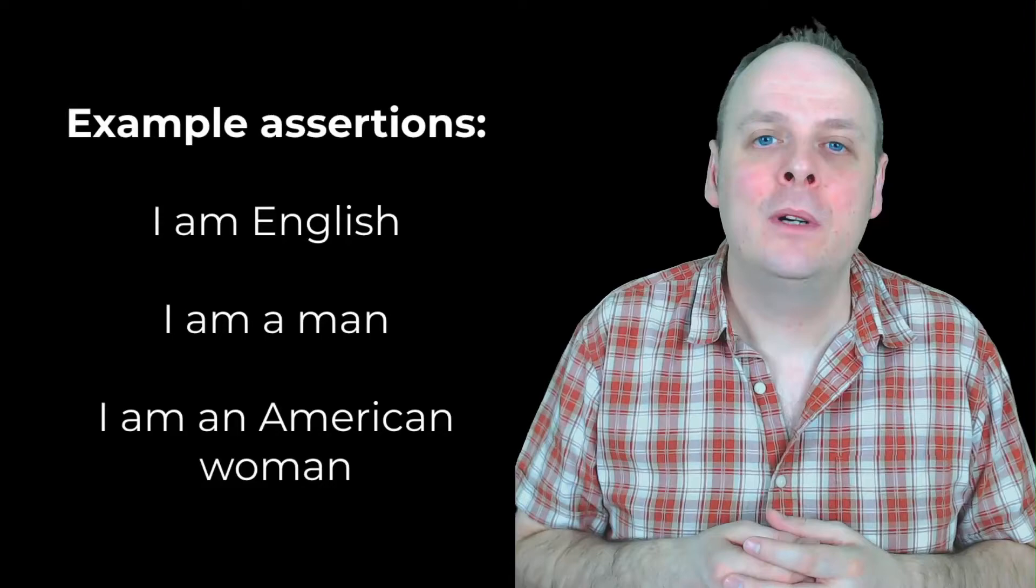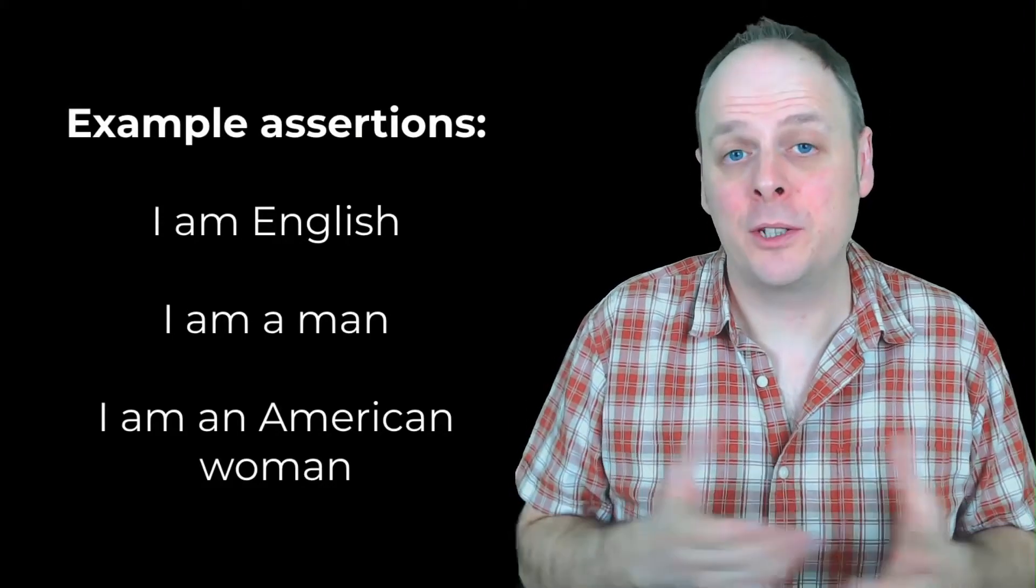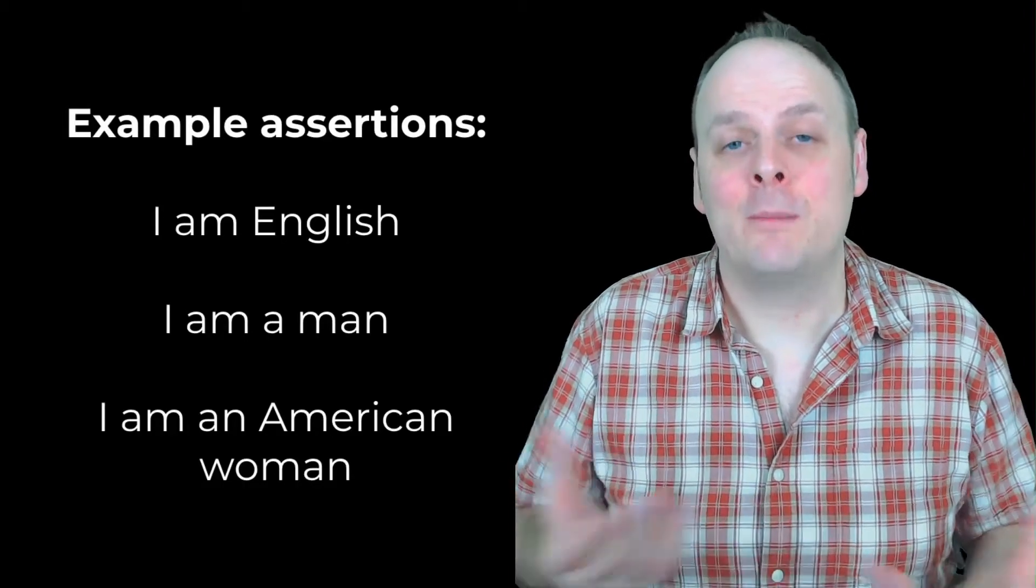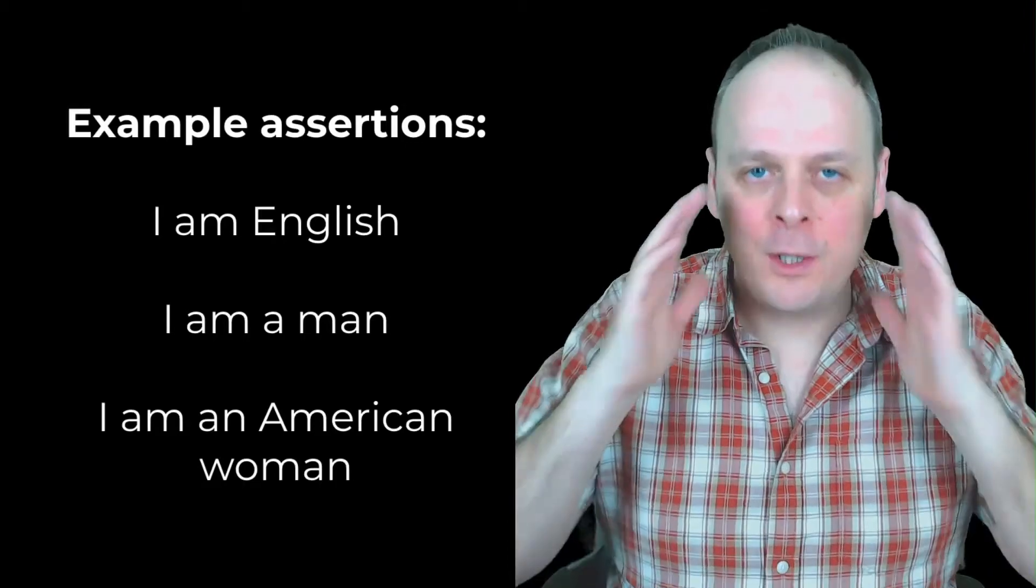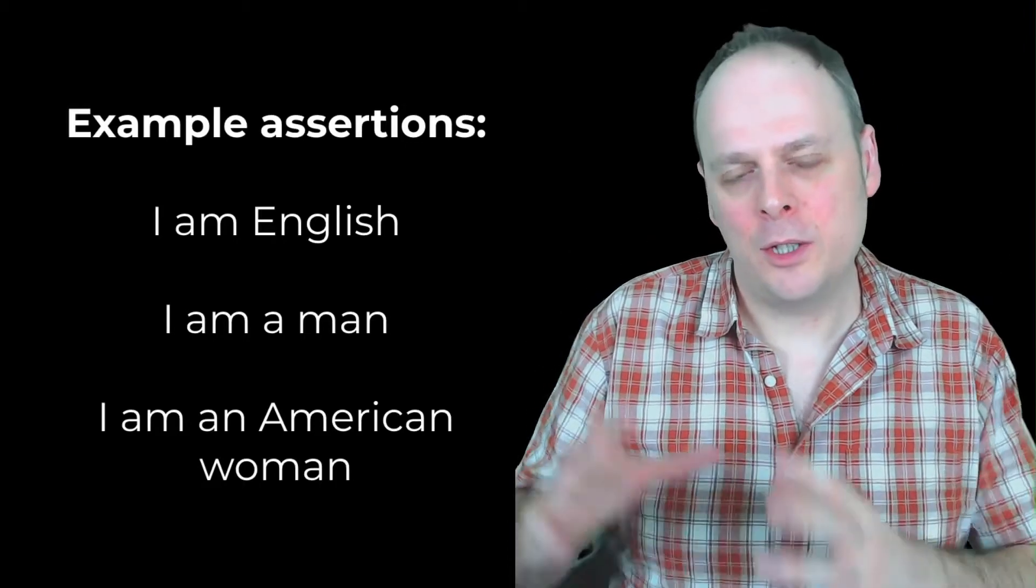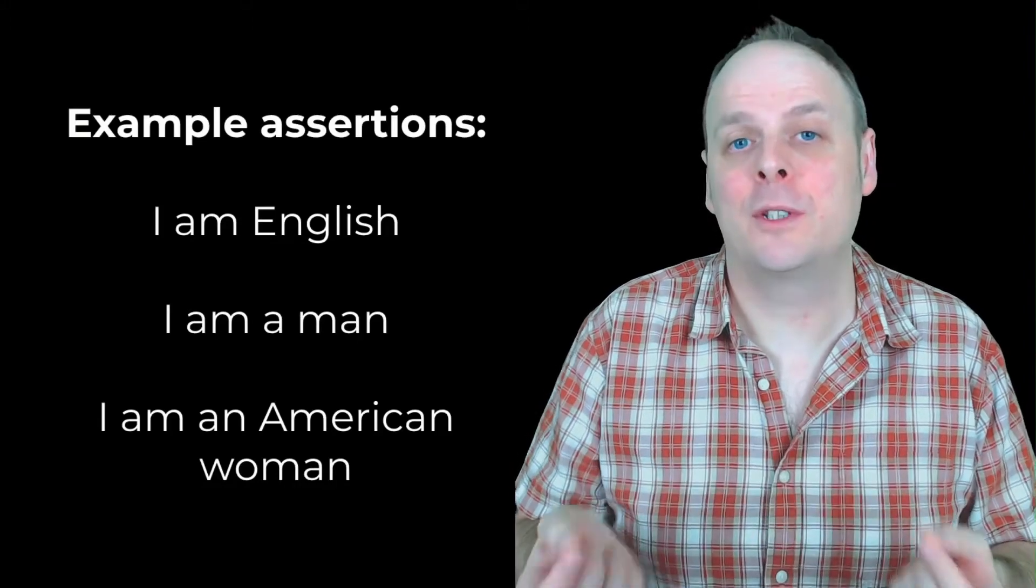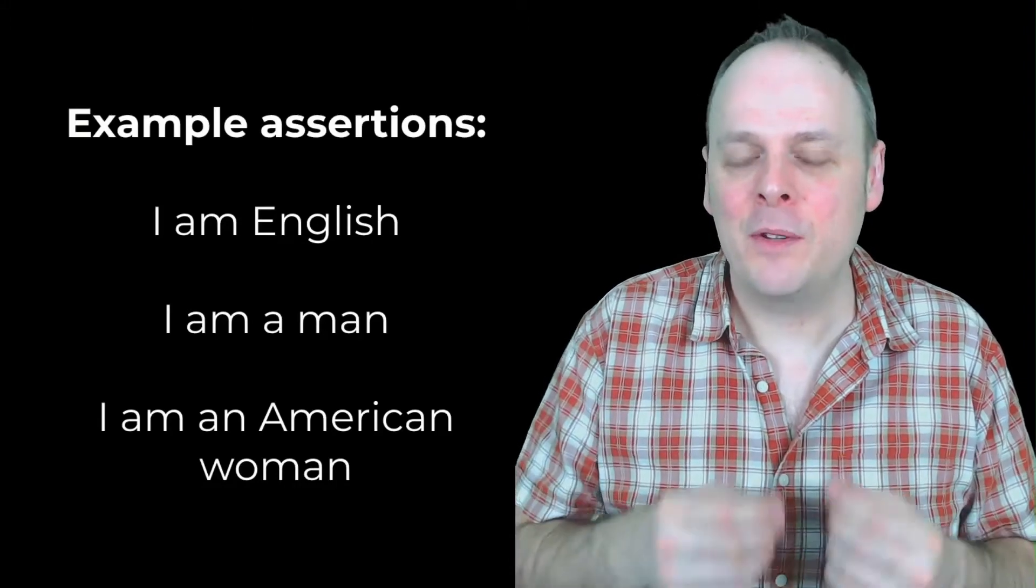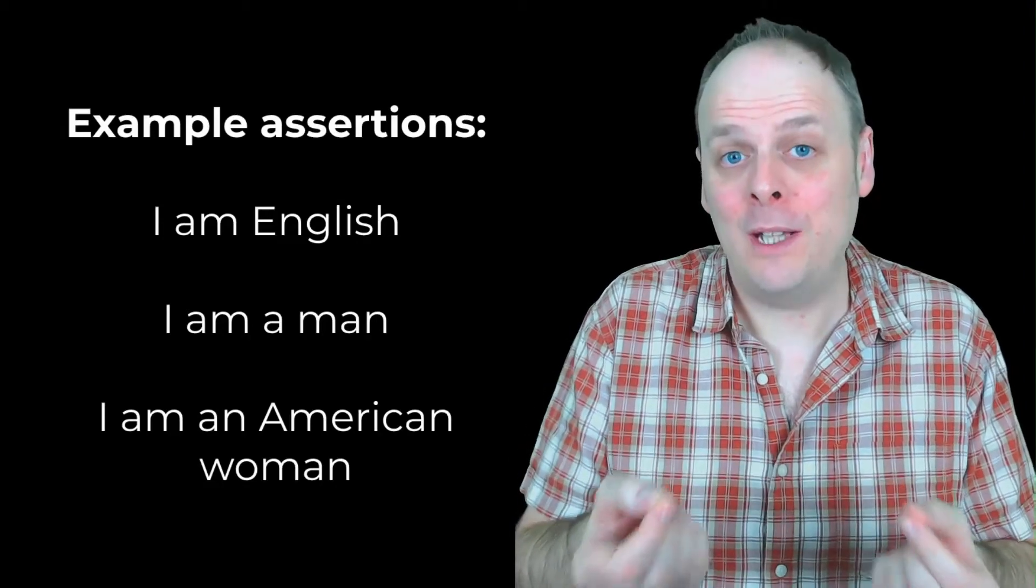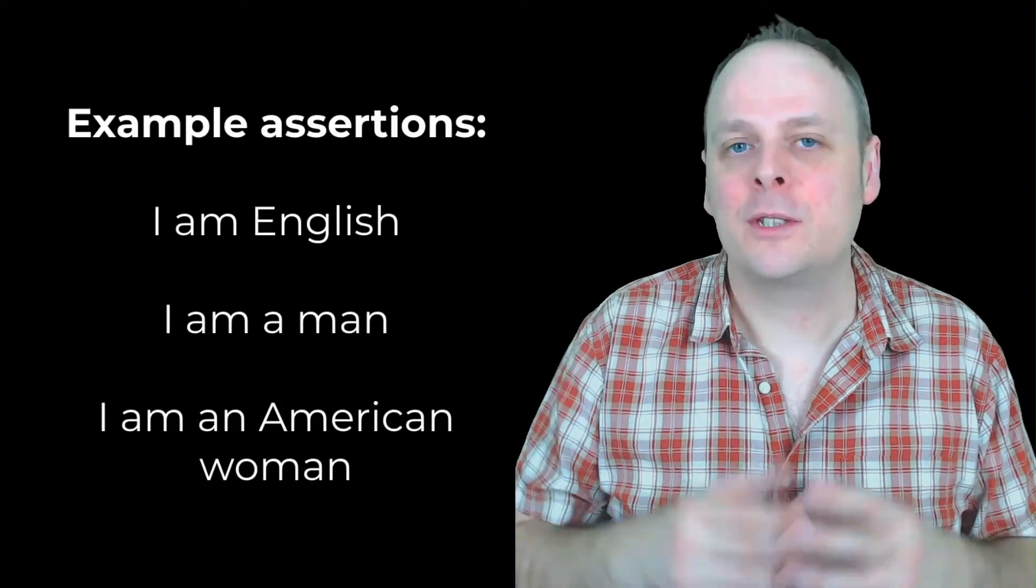Similarly, you can also have an assertion which doesn't happen to be true. For example, I could assert I am an American woman. Now obviously I am not an American woman, but nevertheless that could still be an assertion. You've got to decouple in your mind the idea of asserting something and of something being true. An assertion is a belief that something is true. It's not necessarily the case that something is true.